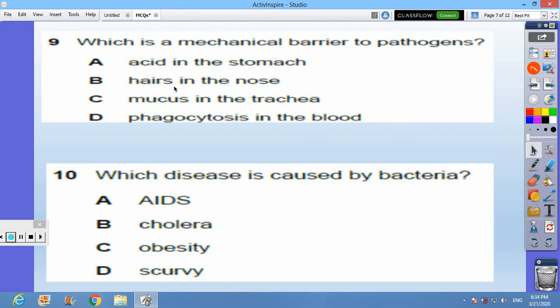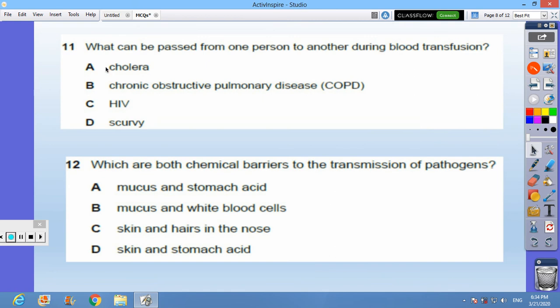Question 9: which is a mechanical barrier to pathogens? It's B, the hair in the nose. Question 10: which disease is caused by bacteria? B, cholera. Question 11: what can be passed from one person to another during blood transfusion? HIV.